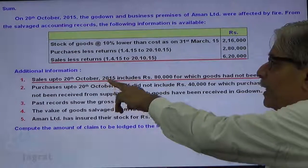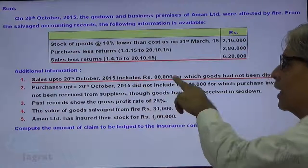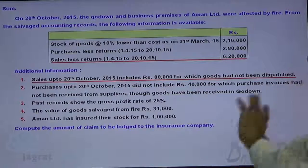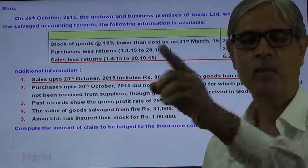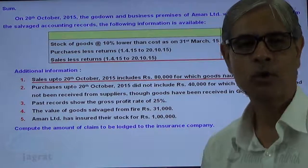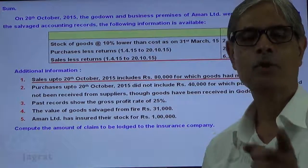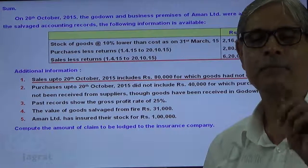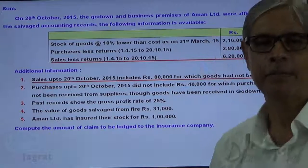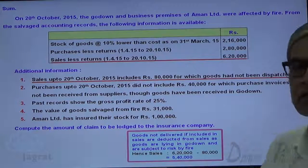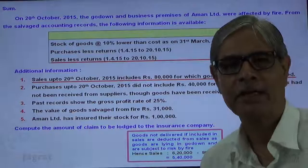Sales up to 20th October 2015 included 80,000 for which goods had not been dispatched. If the goods are not dispatched, they don't go out — so they remain with the trader. The sales to be recorded in the memorandum trading account are always those sales for which delivery has been made. So sales minus 80,000 (delivery not made) is the value of sales to be recorded in the memorandum trading account.